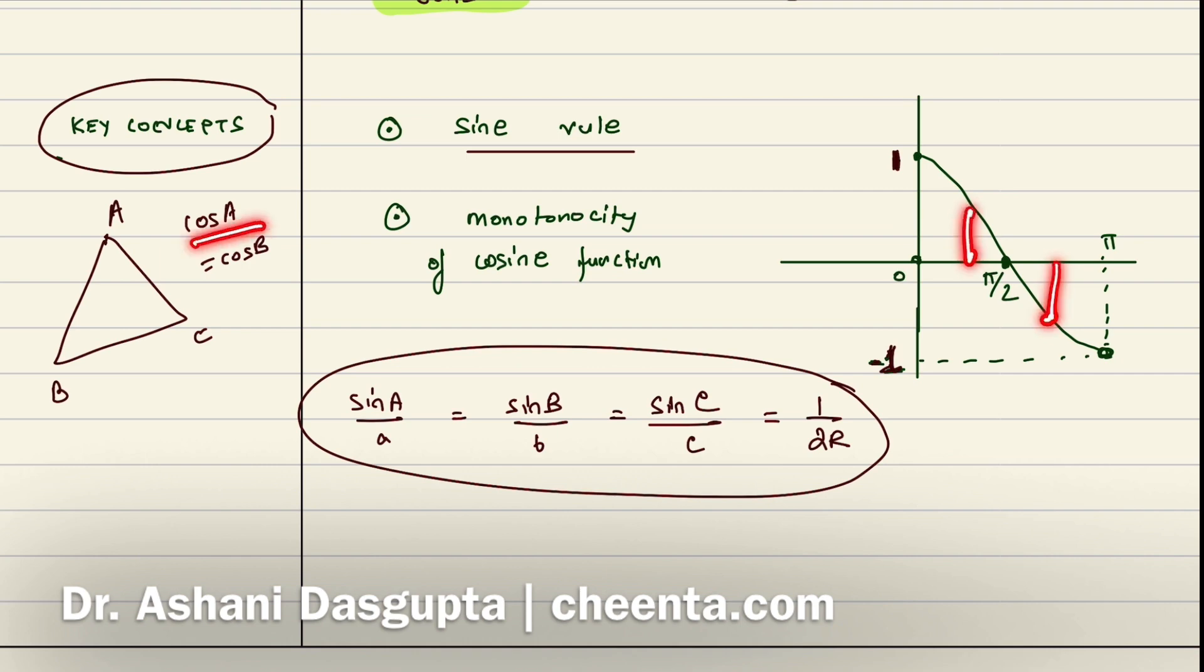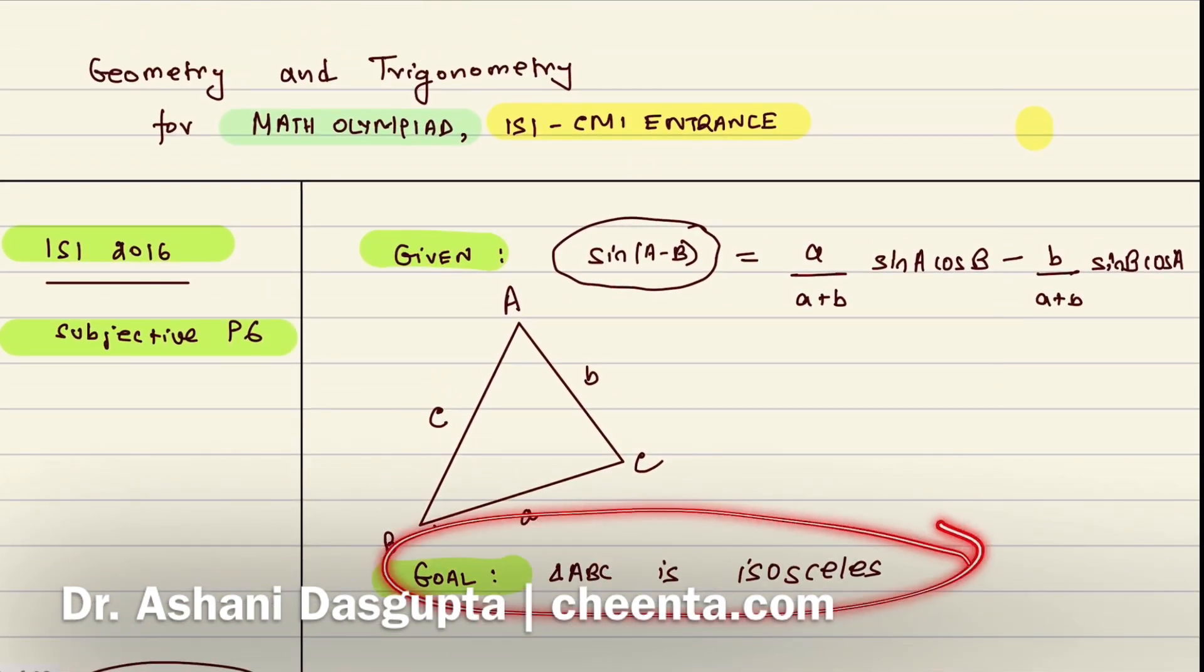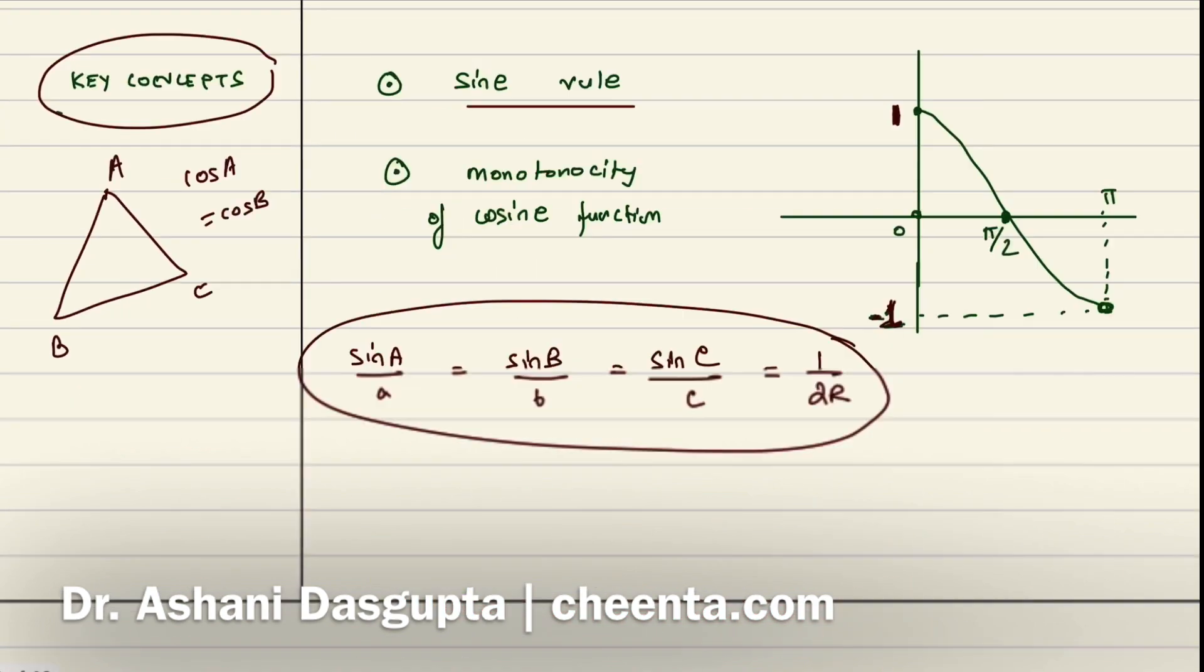So if cosA equals cosB in a triangle then it must be true that angle A equals angle B. So we will be using these two facts to prove that the triangle ABC is in fact isosceles. So let's do some simplification.